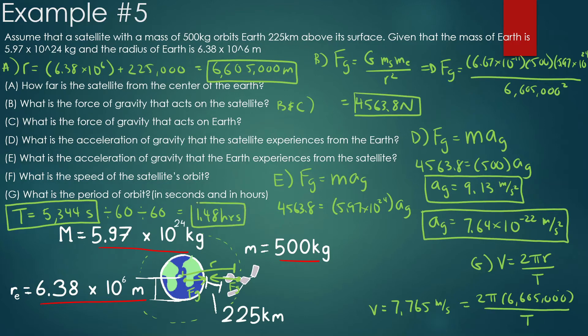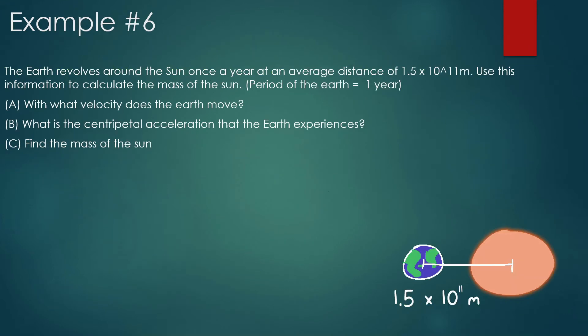Satellites move very quickly around the Earth — they can see multiple sunrises and sunsets. Now let's move to the next problem: the Earth revolves around the Sun once a year at an average distance of 1.5 times 10 to the 11 meters. Use this information to calculate the mass of the Sun.